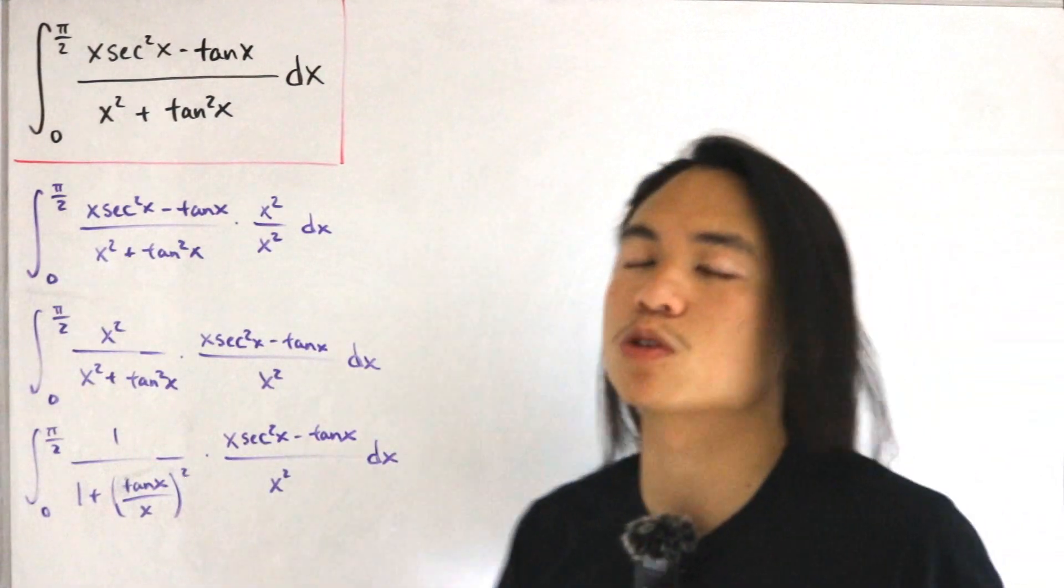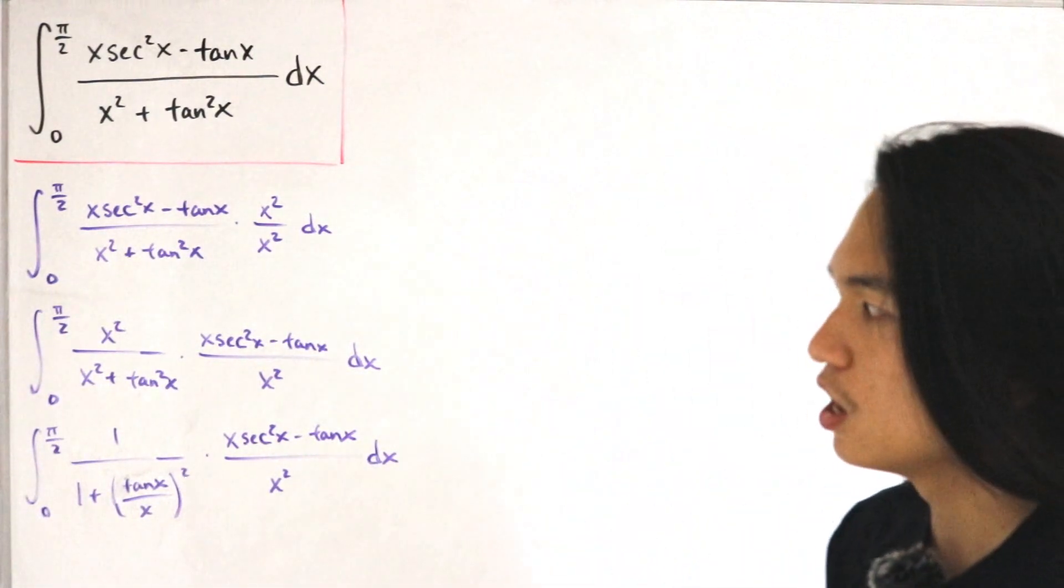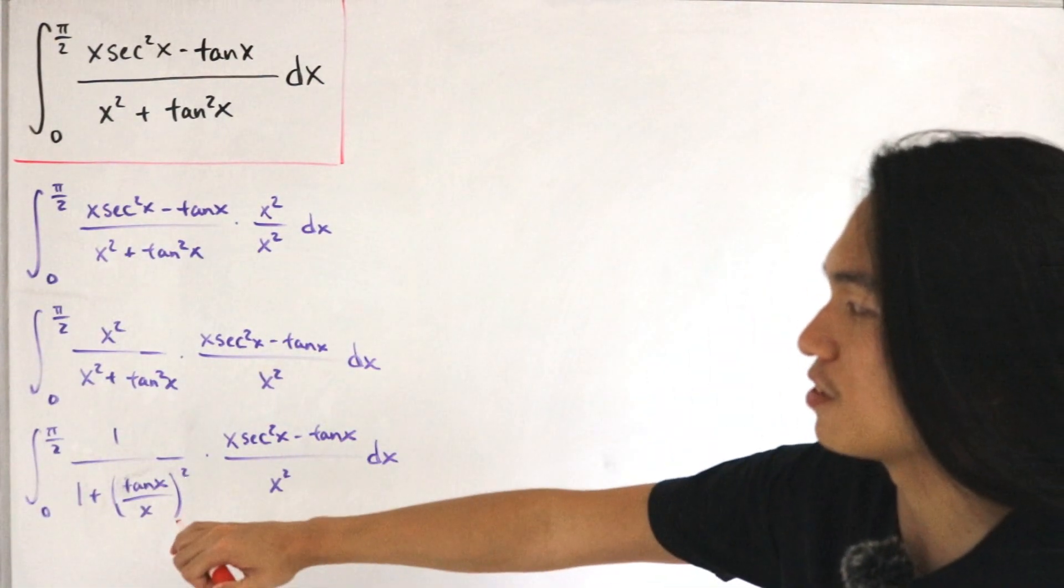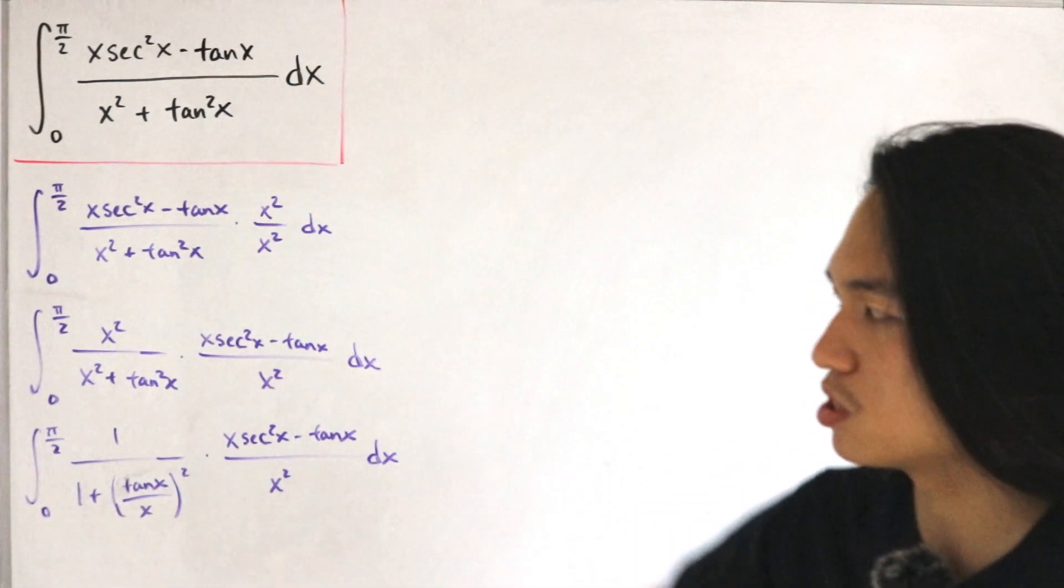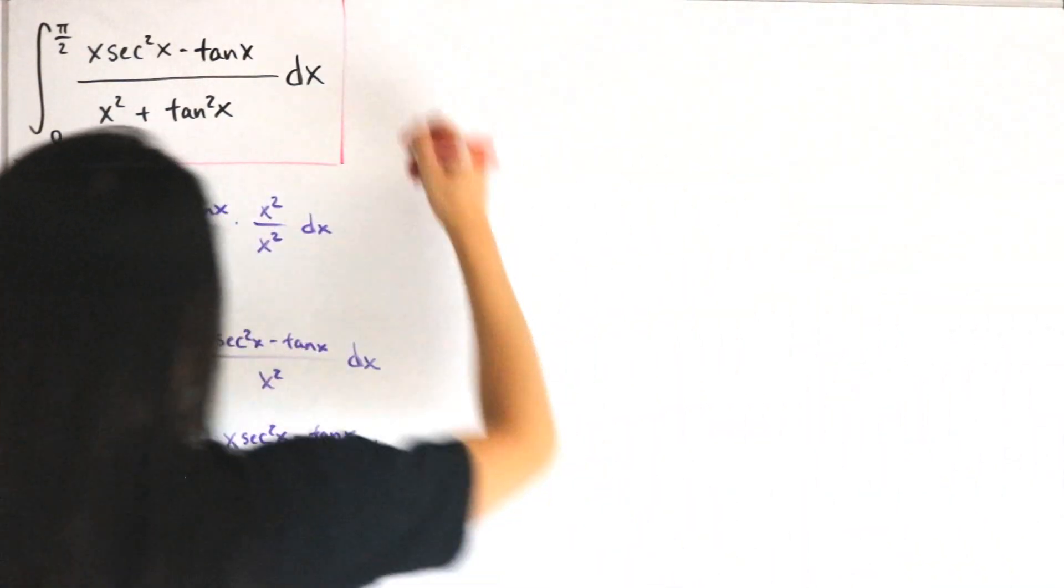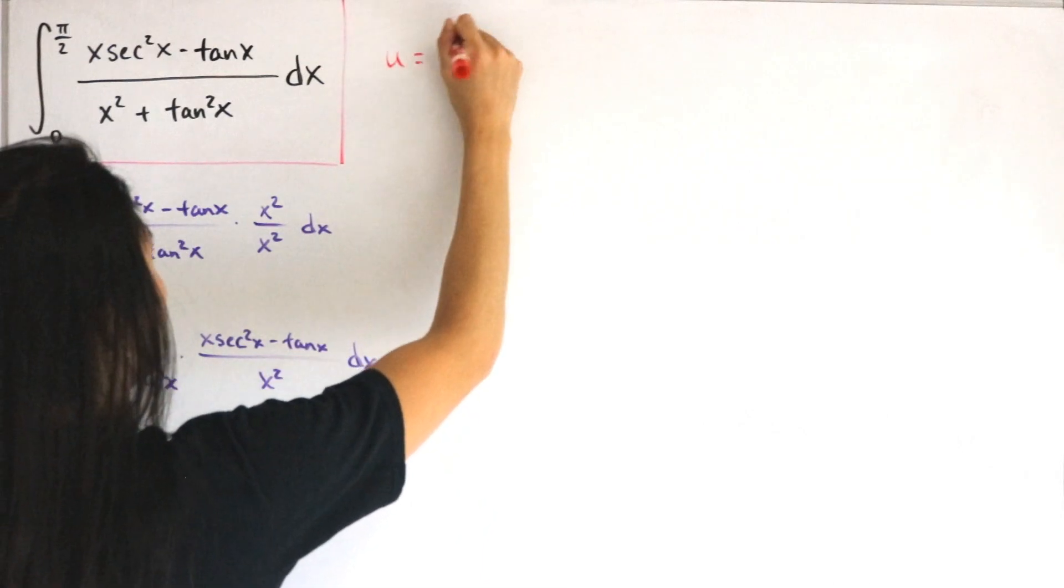I think it's plain and obvious that the best thing to use is tan x / x. So we have u = tan x / x.